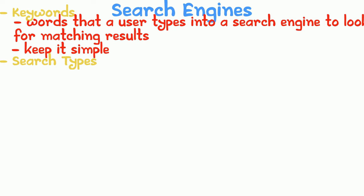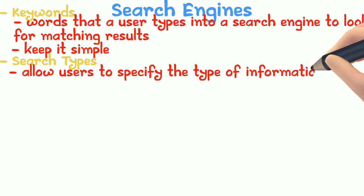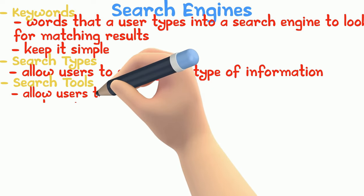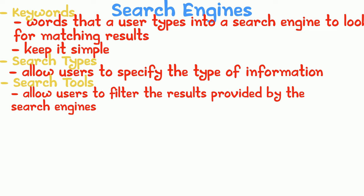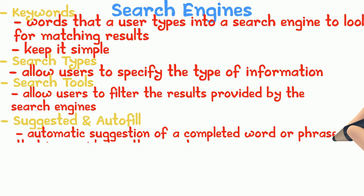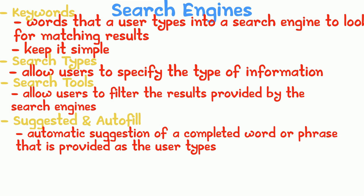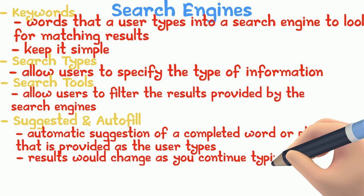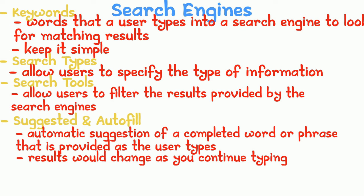Search tools allow users to filter results by date, region, or language. Suggested and autofill: autofill automatically suggests a completed word or phrase as the user types, and suggested results narrow down as more details are provided. Autofills can also be suggested based on browser history.